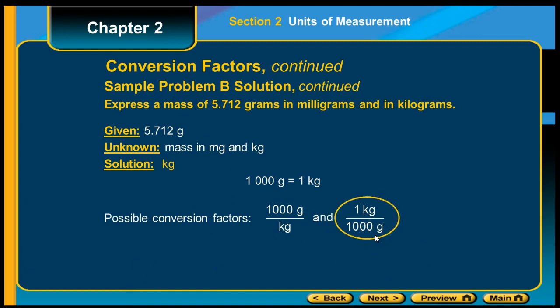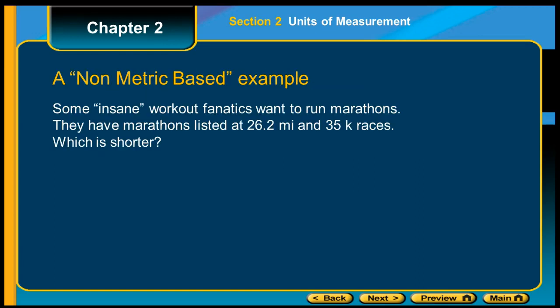We now set it up: 5.712 grams times that fraction, and you get 0.005712 kilograms. If you look, you have grams to start and grams on the bottom. They cancel and you're left with kilograms. So it's all about making sure that you do conversions.